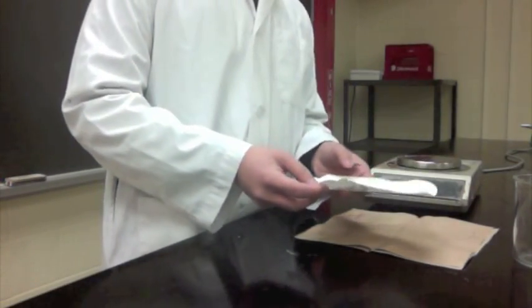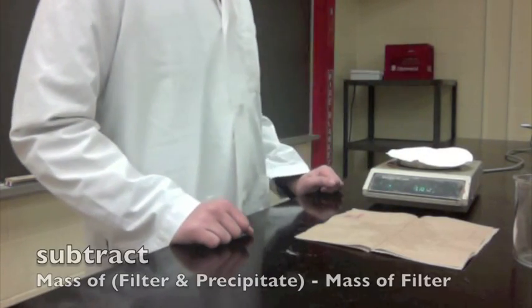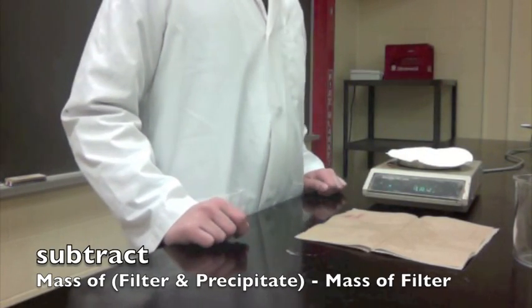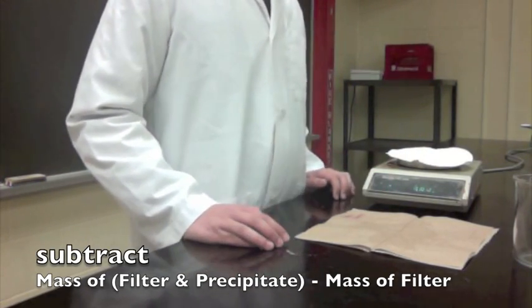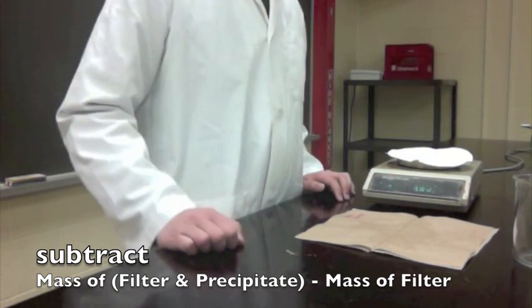Once all of your precipitate has dried, you will now have to take its mass. Once again, re-zero the scale and place it on. To find the mass of precipitate, remember that you previously weighed the mass of the paper filter. Subtract this value from the previous value.